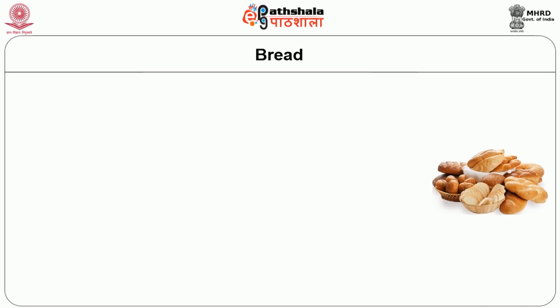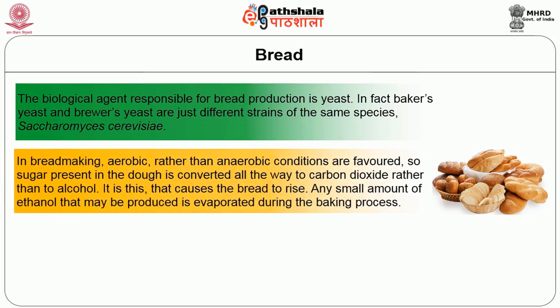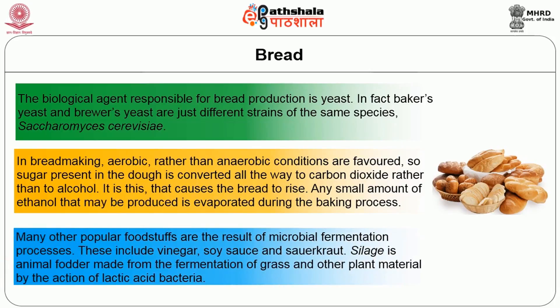Bread is an important product. The biological agent responsible for bread production is yeast — in fact baker's yeast and brewer's yeast are just different strains of the same species, Saccharomyces cerevisiae. In bread making, aerobic rather than anaerobic conditions are favored, so sugar present in the dough is converted all the way to carbon dioxide rather than to alcohol. It is this carbon dioxide that causes the bread to rise. Any small amount of ethanol that may be produced is evaporated during the baking process.